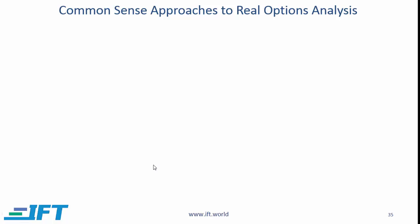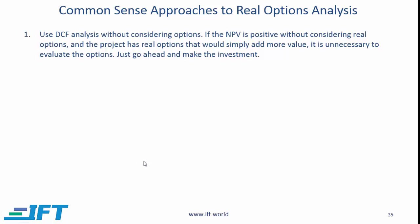How do you evaluate and analyze real options? The curriculum doesn't go into too much detail but gives some common-sense approaches. One is to use discounted cash flow analysis without considering options. If you do an NPV analysis of a project and the NPV is positive even without considering any option, then you just go for it — because the embedded options can only add value to an already positive NPV project.